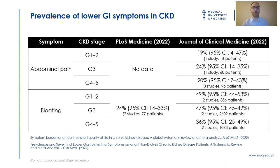A half year later, we published a systematic review fully dedicated to lower GI symptoms and found a lot more data that enabled us to take into account the stages of CKD. In this table, I compared findings from the previous systematic review and our work on the right. In the case of abdominal pain, we provided data that were completely missed in the previous systematic review. In other cases, we analyzed data for thousands of patients more, as in the case of bloating.